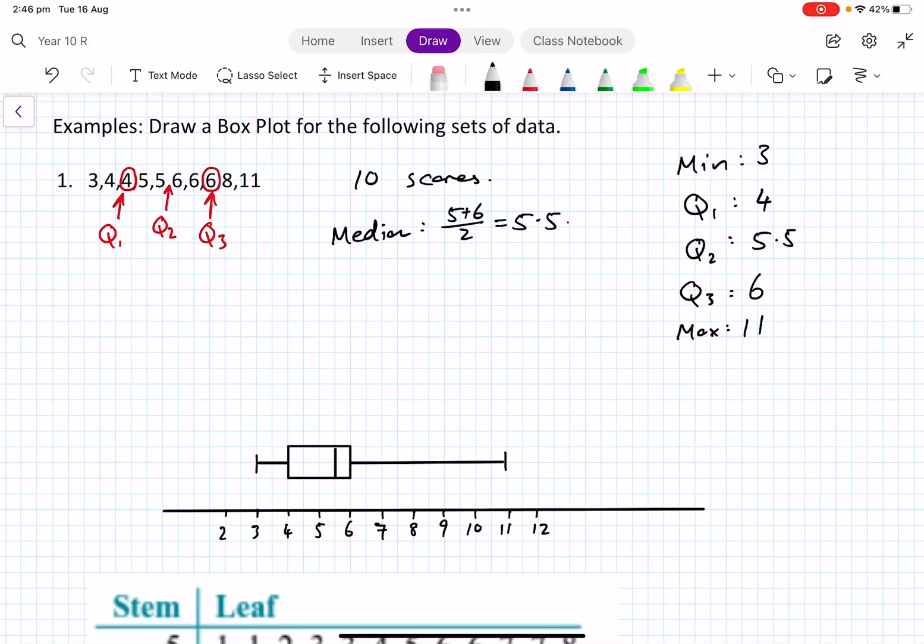Okay, hi everyone, we're going to talk about box plots. This is what I prepared earlier from a simple list that we should all be comfortable with: 3, 4, 4, 5, 5, 6, 6, 8, 11. There's 10 scores, and so I found the median which is 5.5, it's between the 5 and the 6.